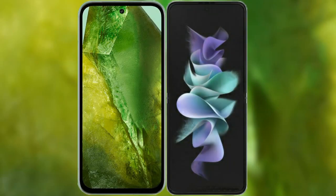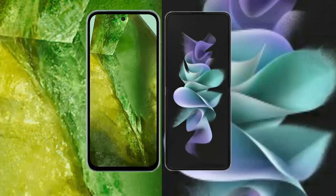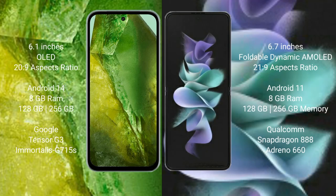I will compare the new Google Pixel 8a with Samsung Galaxy Z Flip 3. Google Pixel 8a comes with a 6.1-inch OLED display and 20:9 aspect ratio. Samsung Galaxy Z Flip 3 comes with a 6.7-inch foldable dynamic AMOLED display and 21:9 aspect ratio.